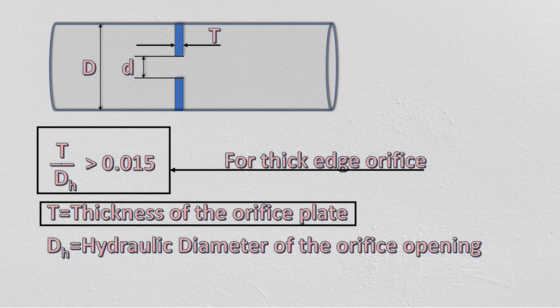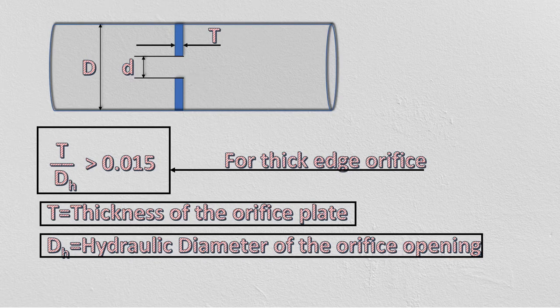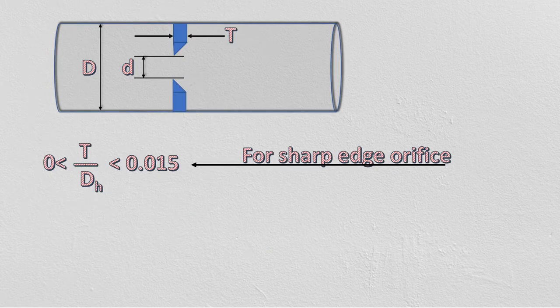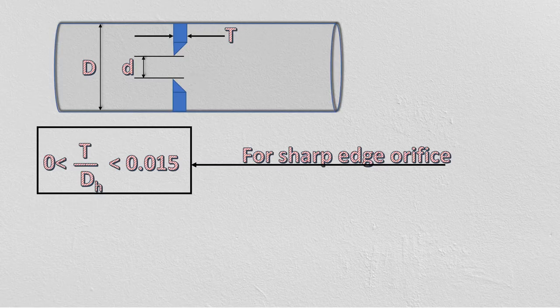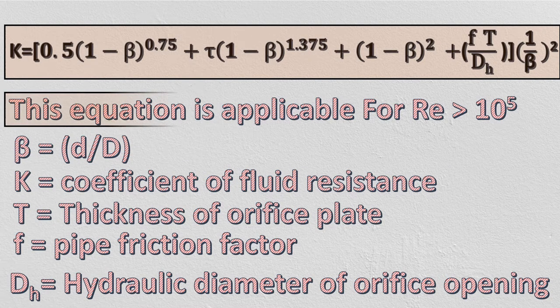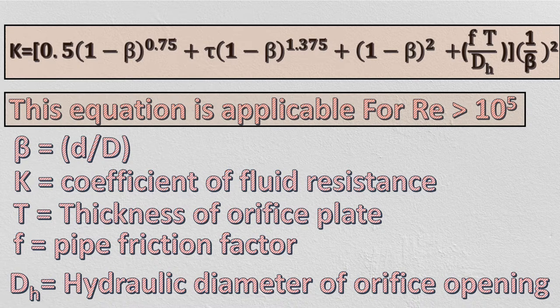Thick edge means the ratio of orifice plate to the hydraulic diameter of orifice opening shall be greater than 0.015. For sharp edge, this ratio lies between 0 to 0.015. This equation is applicable for Reynolds number greater than 10 to the power 5.